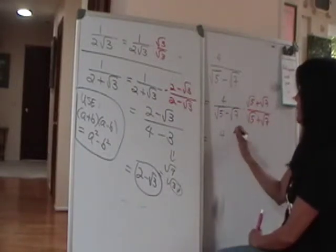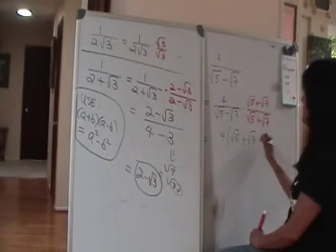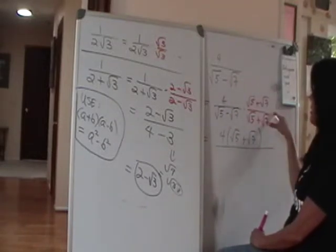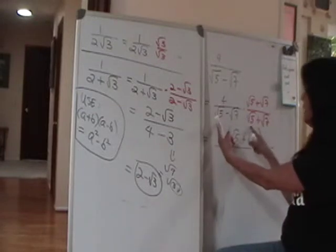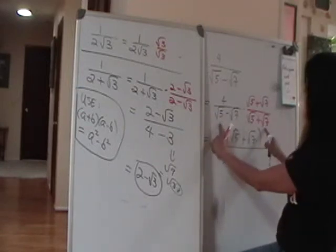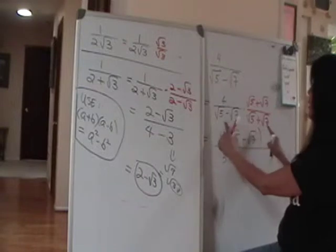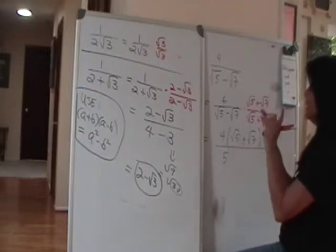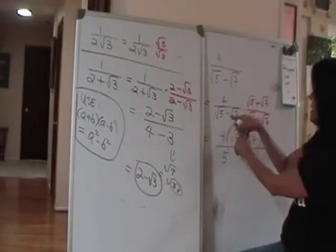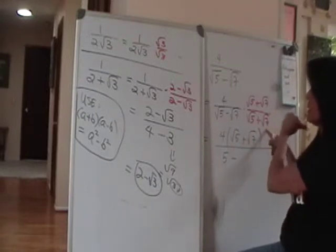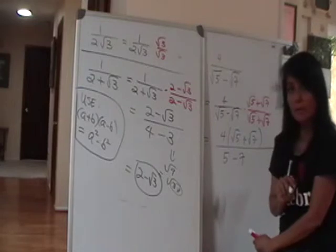I recommend you keep the 4 separate before multiplying, because sometimes things cancel. We really just want to multiply numerator by numerator. First with first: square root of 5 times square root of 5 — that's 5, so one 5 comes out. When you multiply the outer and inner terms, they're exactly the same except one is positive and the other is negative, so they cancel out — the O and I terms in FOIL disappear.